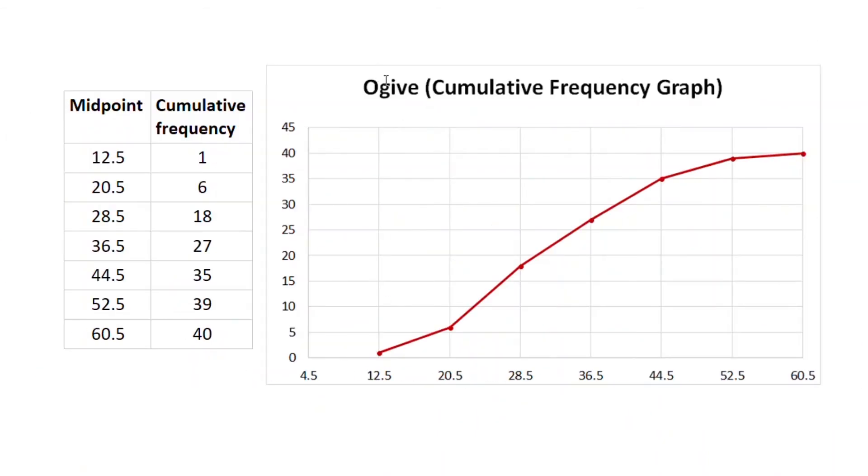A cumulative frequency graph is called an ogive. And it's a line graph that displays the cumulative frequency. So at the midpoints, you can see we start at 1, then we go to 6. Then adding them all up, we get to 18, et cetera, et cetera. At the final point on the ogive, you should have the n number, which is 40.